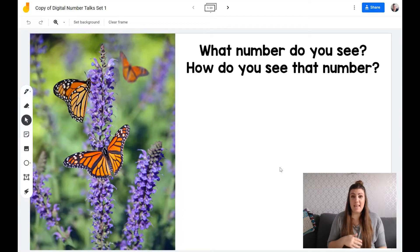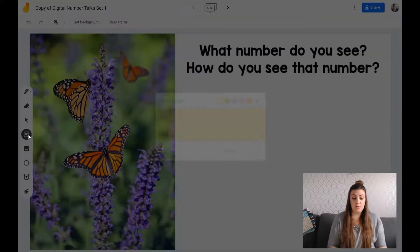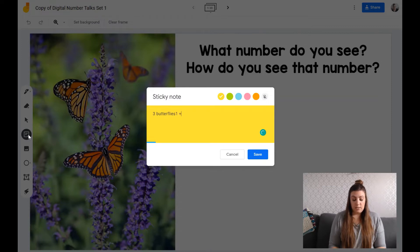So with Jamboard, that's why I picked Jamboard first because it's so easy. If you are doing it or the students are doing it, either way, it's really easy to just add a sticky note. And then let's say little Jace said that I see three butterflies, one plus one plus one equals three. And then you save that on there.